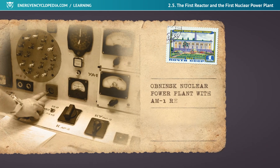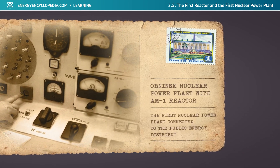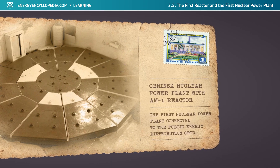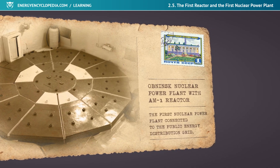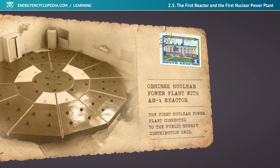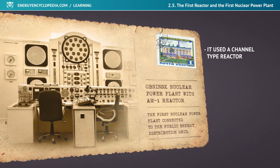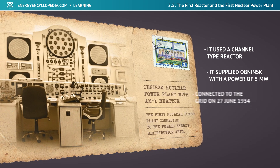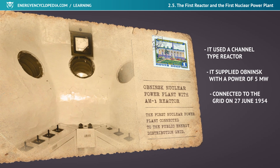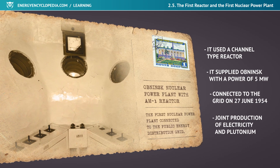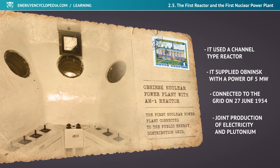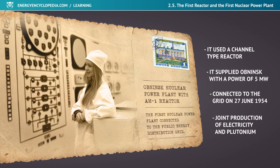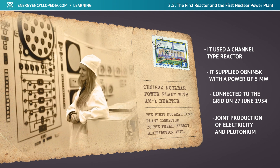Another first belongs to the Russian nuclear power plant with the RBMK-type reactor, built in the 1950s in Obninsk. It was the first nuclear power plant in the world to be connected to the distribution network. Its output was already 5 MW, and it started supplying the city of Obninsk with electricity on the 27th of June, 1954. As with the EBR, this type of reactor was capable of producing plutonium in addition to electricity.